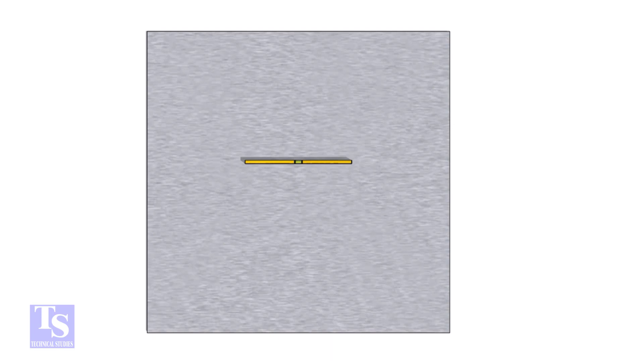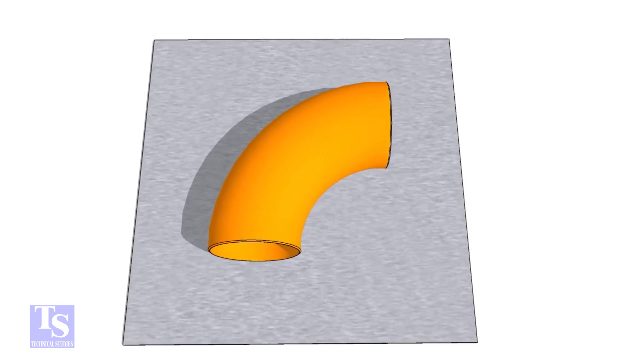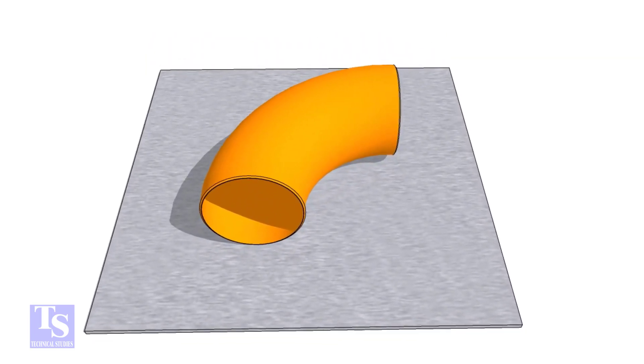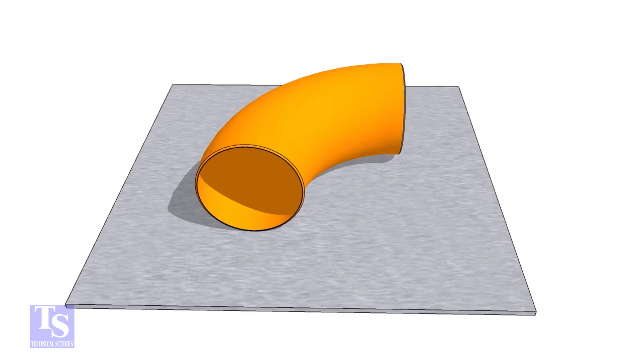First of all, choose a leveled plate and put the elbow on it. Check the outer diameter of the elbow.